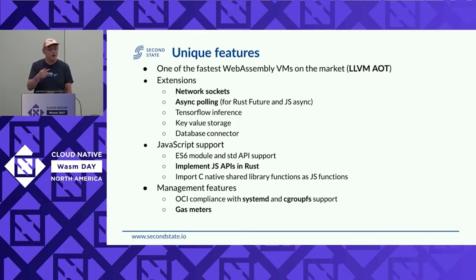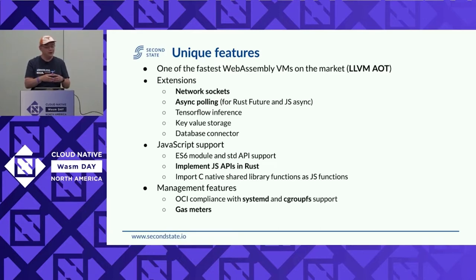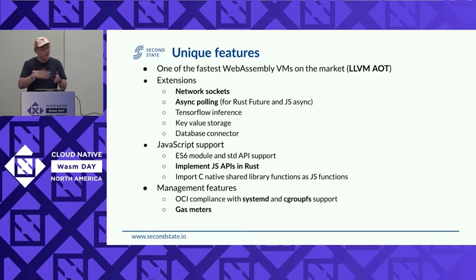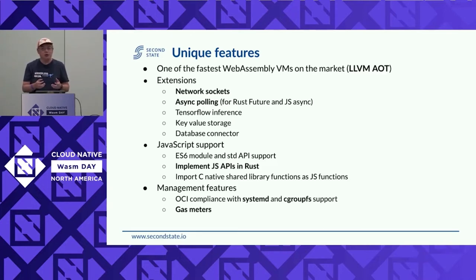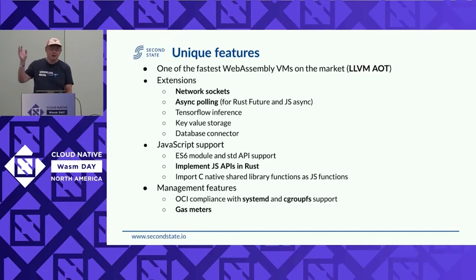This is a page we borrowed from the blockchain people — what they call gas meters. Essentially you give each WebAssembly opcode or instruction a gas value. When you start this VM, you allocate, say, a million gas. It computes how many instructions it goes through, and after you've used all the gas, it stops. You can even have people pre-buy gas as credit. We have this gas support built into our C API, Go API, and Rust API. I believe WasmTime also has something similar in their Rust API.